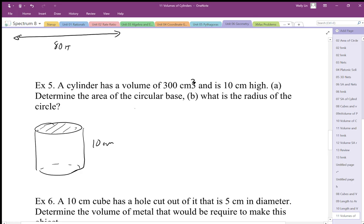So we know that 300 equals the area times 10. If we want to undo that times 10, we can divide both sides by 10 and we get an area of 30 centimeters squared. That's part A.